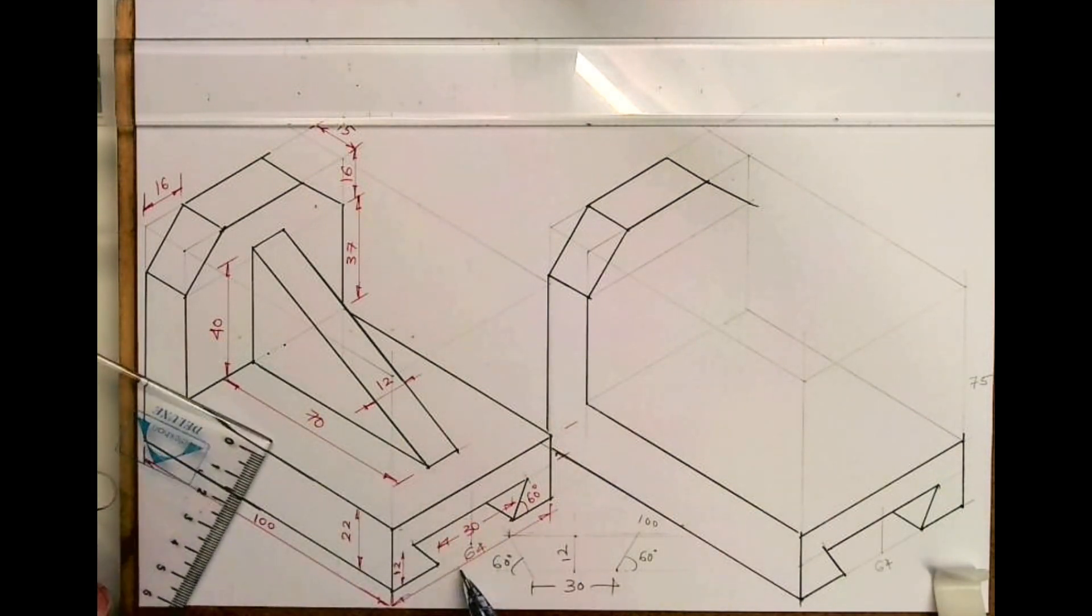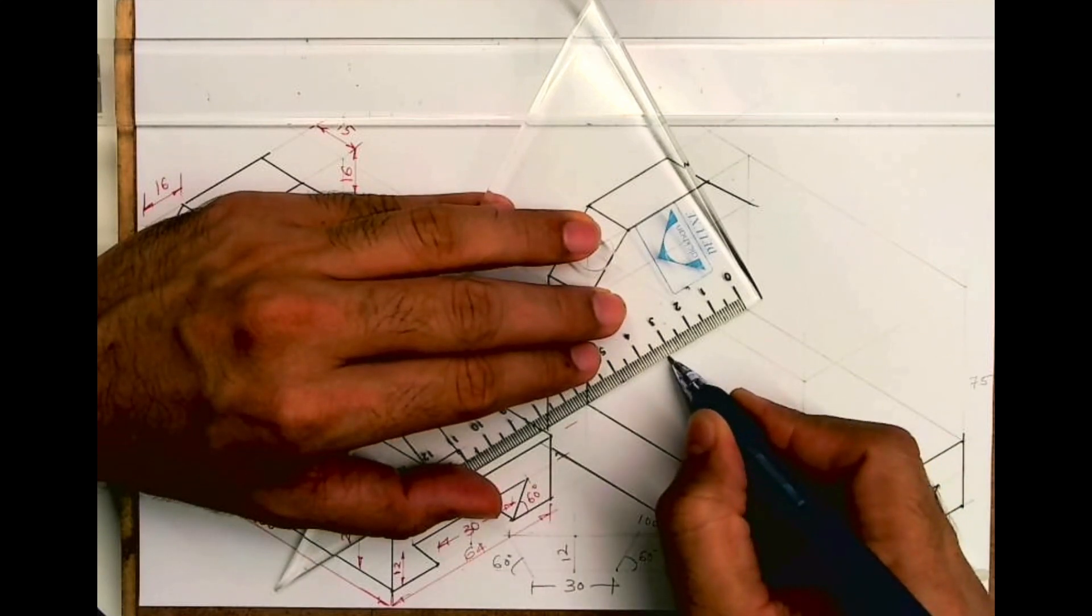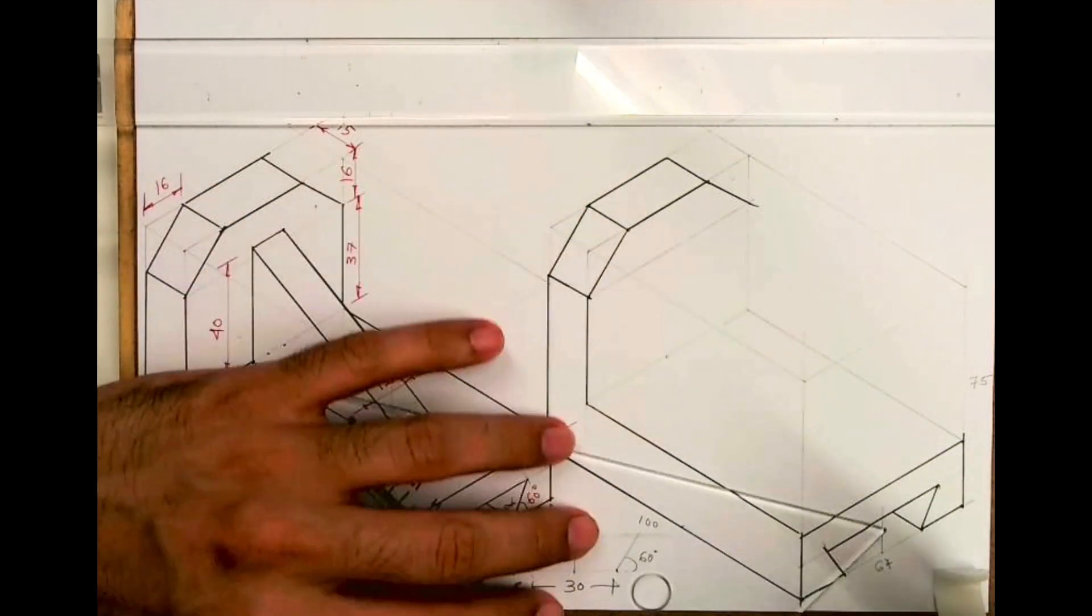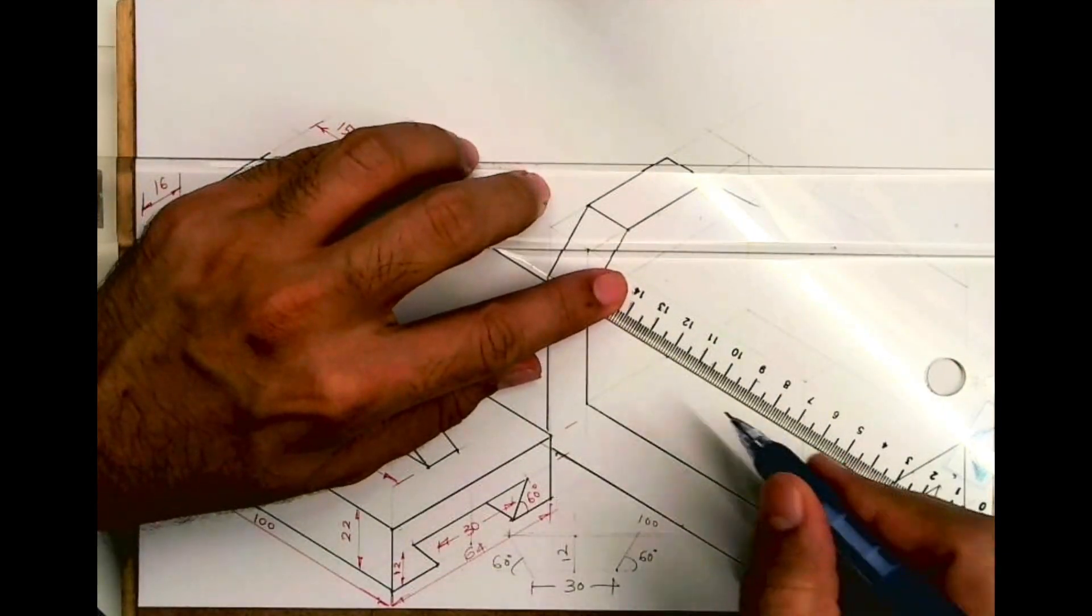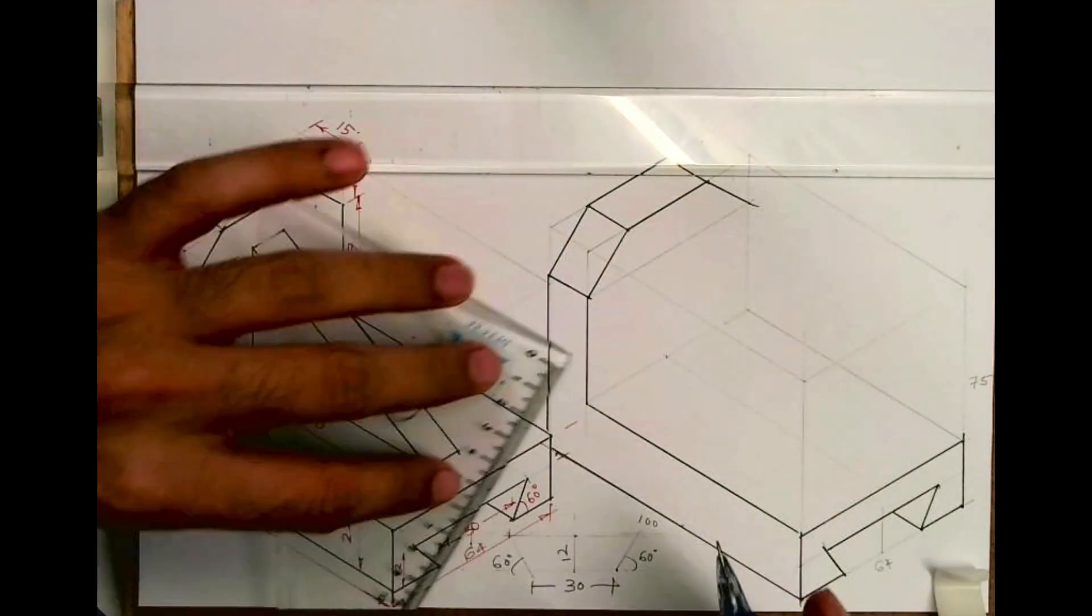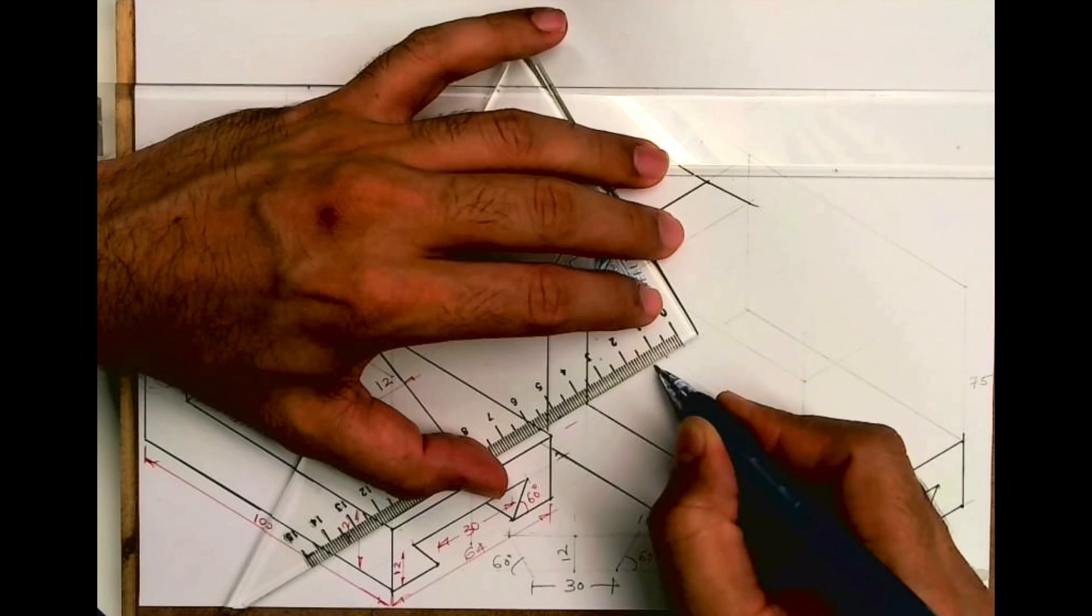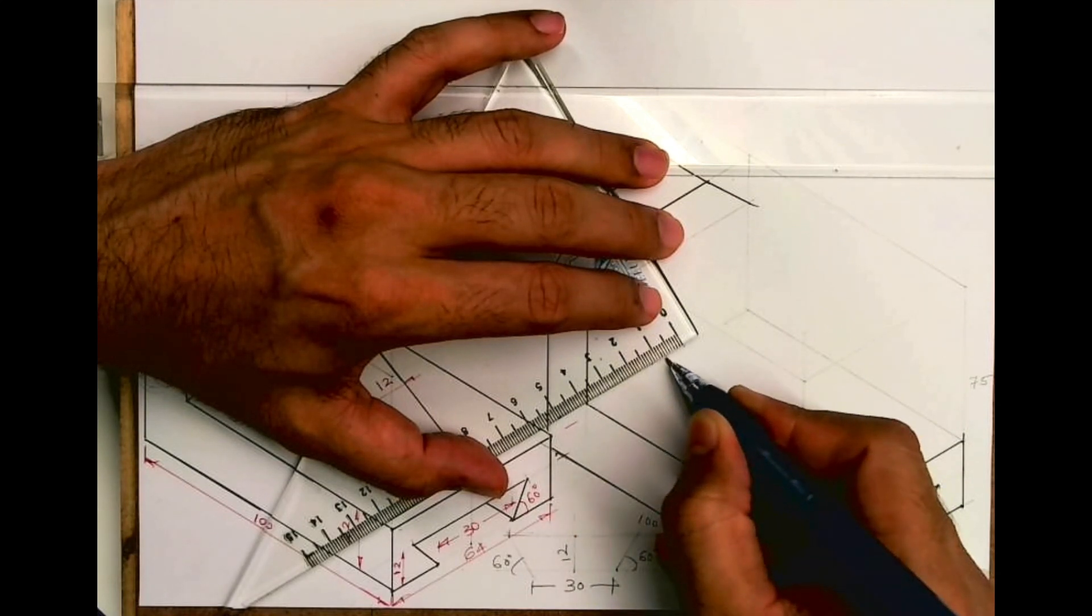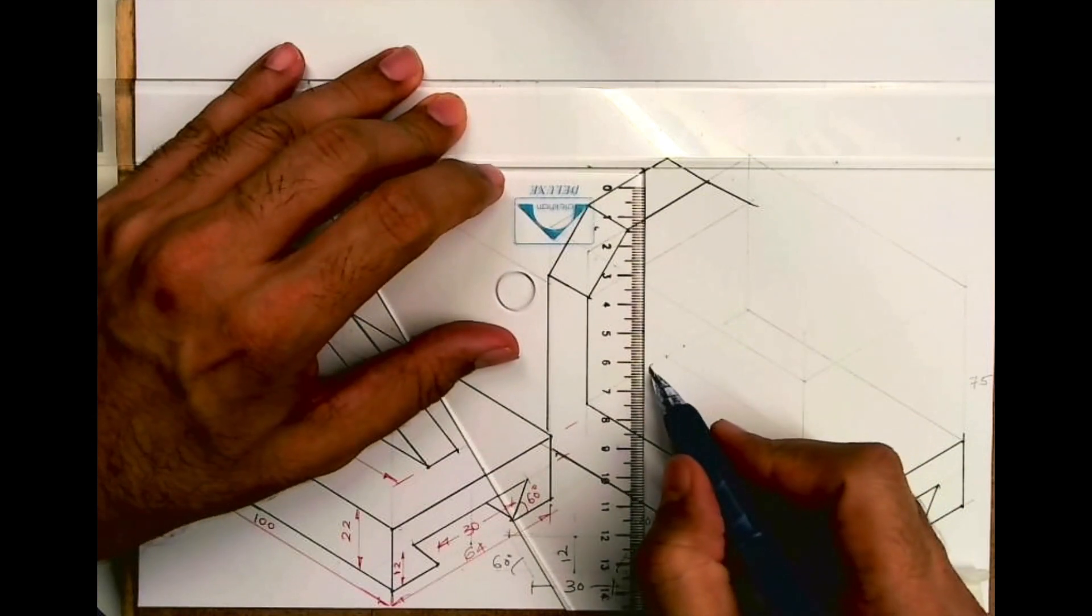Now to draw this, how much is this? 64. So 64 half is 32, and from there I will take 6 on both the sides. And you go up by 40.